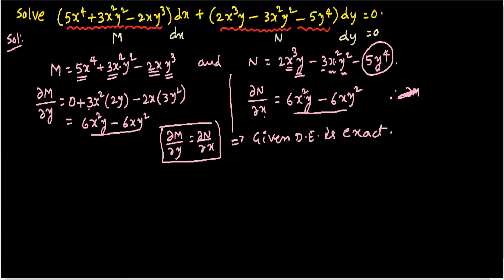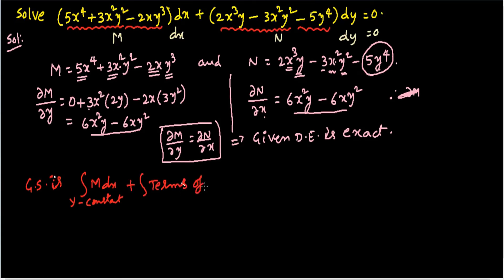Whenever we obtain an exact equation, we can write the general solution directly using the formula: ∫M dx (treating y as constant) + ∫(terms of N not containing x) dy = c.